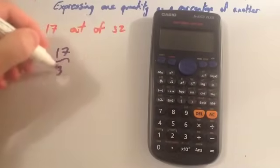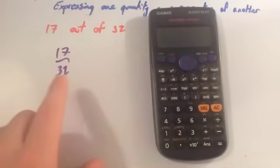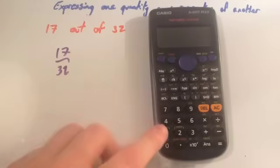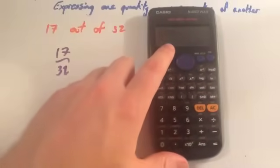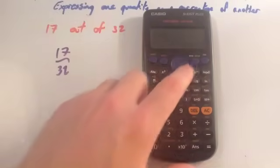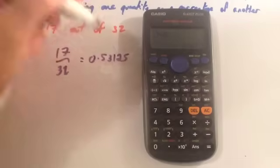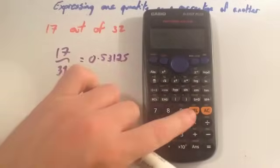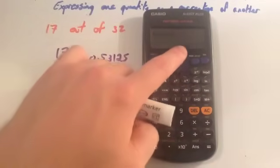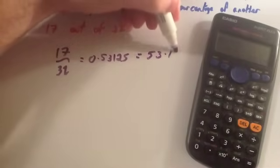That's 17 out of 32 — we've got a fraction. I want to change our fraction into a percentage. We're going to use our calculator. Remember, in the fraction, the line means divide, so we're going to do 17 divided by 32. If we do 17 divided by 32, we get 0.53125. So that, as a decimal, is 0.53125. But we want it as a percentage, so we want to change our decimal to a percentage — to do that you times by 100. And we get 53.125%. So this is 53.125%.